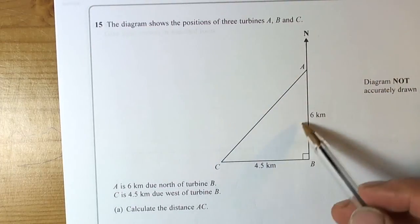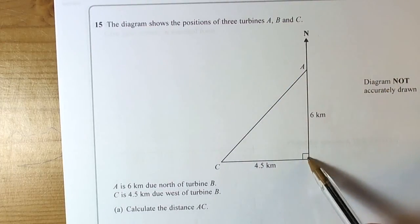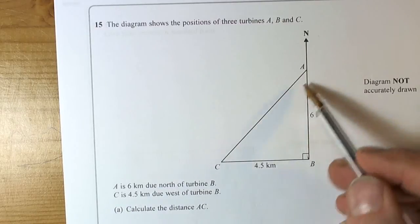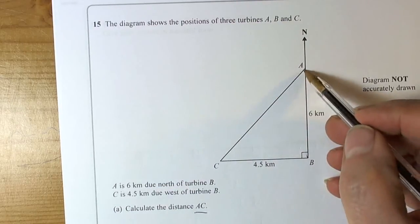This question has given us positions of certain items, telling us a right-angle triangle has been created. The first question says calculate the distance AC.